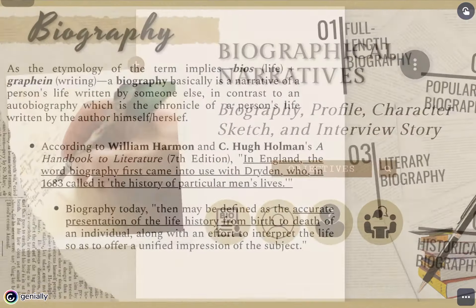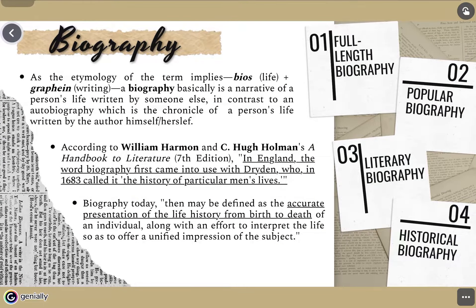So we are now going to biography. As the etymology of the term implies — bios, which means life, and graphene, which means writing — a biography basically is the narrative of a person's life written by someone else. And it is a contrast to an autobiography, which is the chronicle of a person's life written by the author himself or herself. According to William Harmon and C. Hogg-Hallman's A Handbook to Literature, 7th Edition, in England, the word biography first came into use with Dryden, who in 1683 called it the history of particular men's lives. The biography today is defined as the accurate presentation of the life history from birth to death.